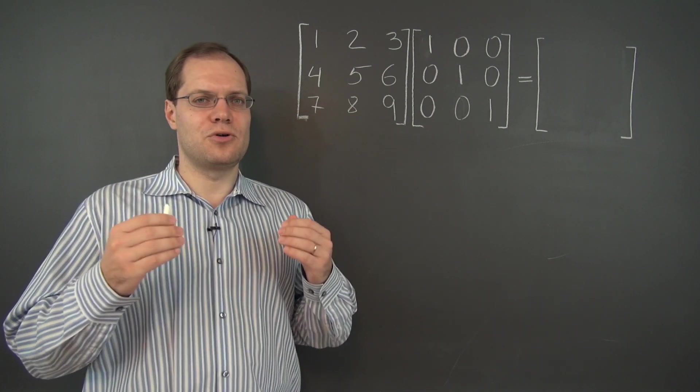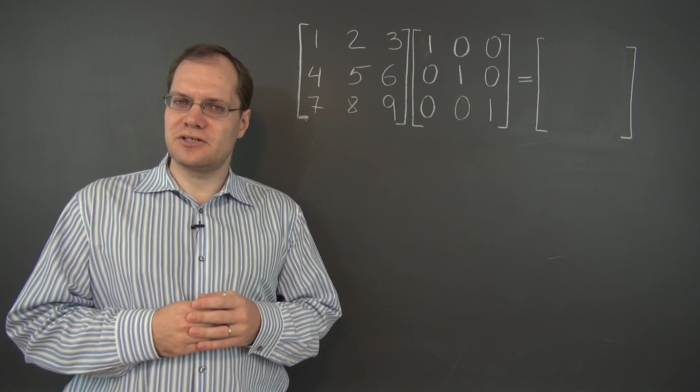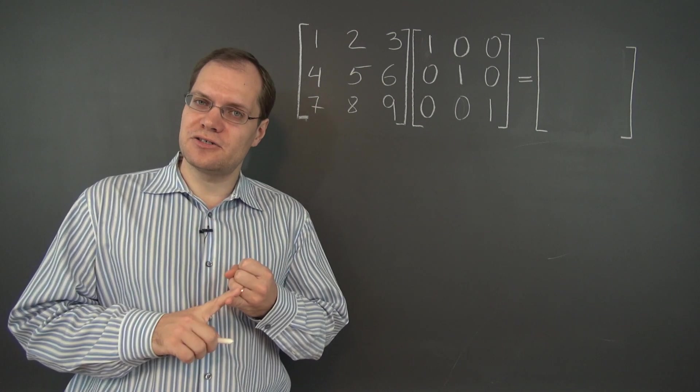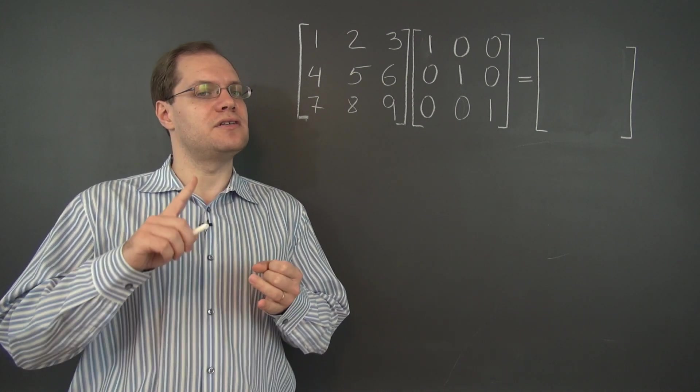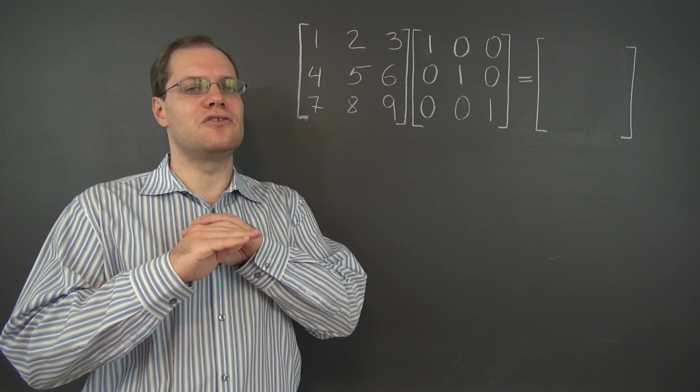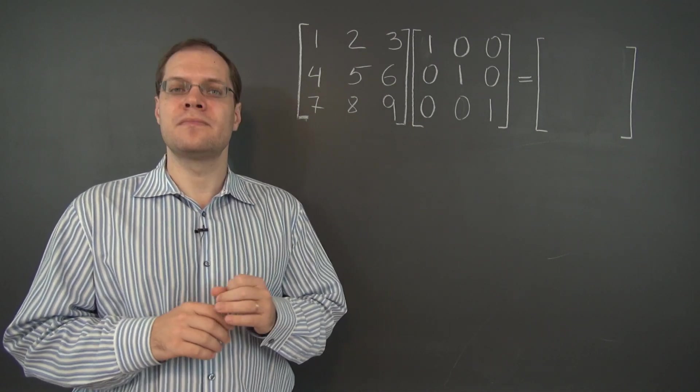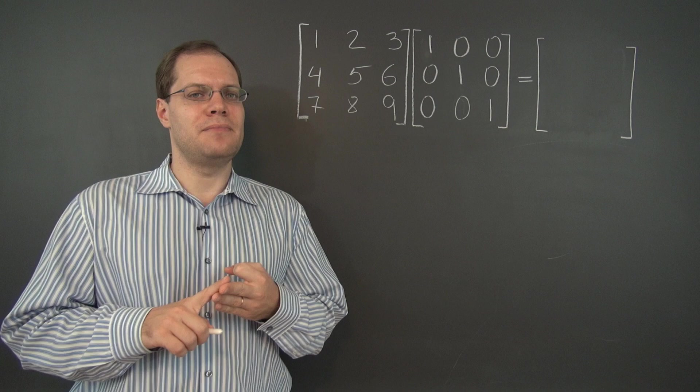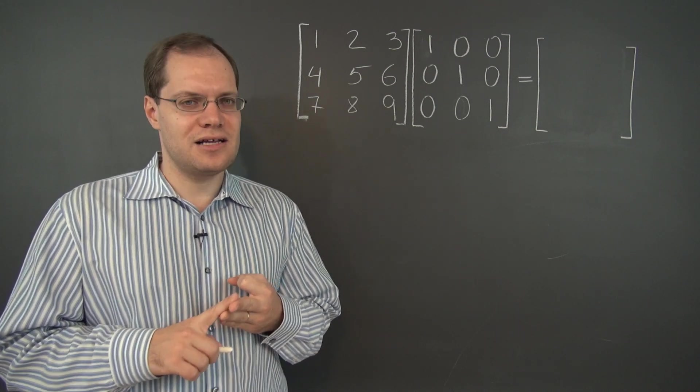We have already established a number of important elements of matrix algebra. We have defined matrix multiplication, we have established associativity, and without associativity there would have been no going forward, and we have determined that matrix multiplication is non-commutative.